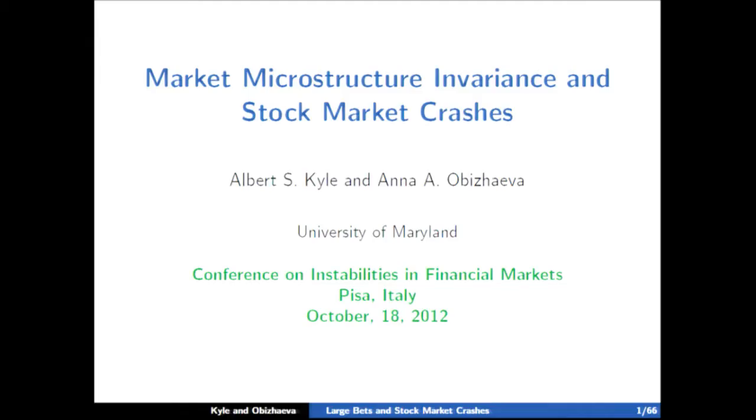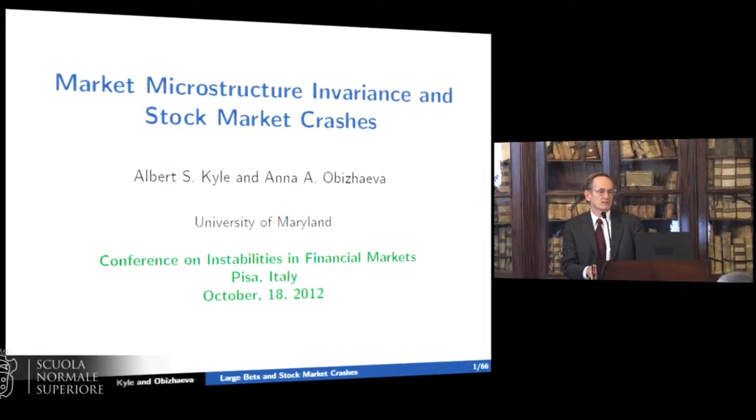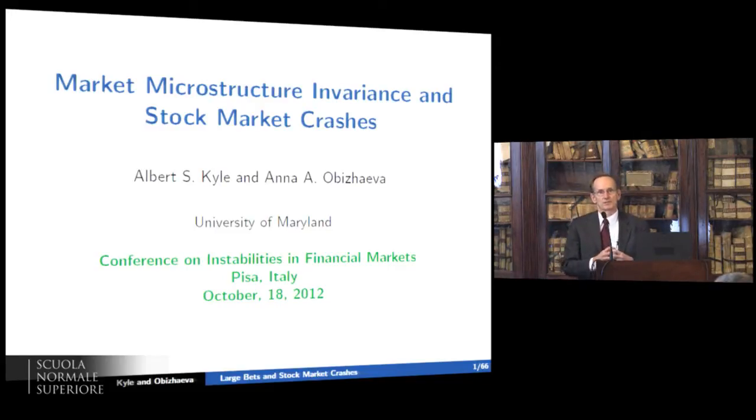I'd like to make some practical comments about a research agenda I've undertaken with Professor Anna Obajeva, a colleague of mine at the University of Maryland in College Park. There are four or five different papers I want to talk about, but in particular there's one on stock market crashes that will be the focus. To understand it, we need to see the bigger picture: we're taking academic-sounding research and applying it to the practical problem of stock market crashes. The academic research is something we have called market microstructure invariance.